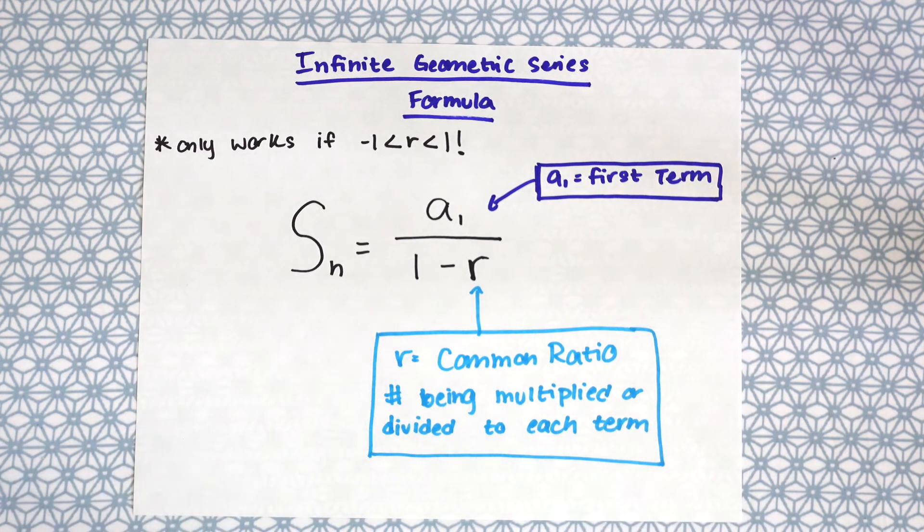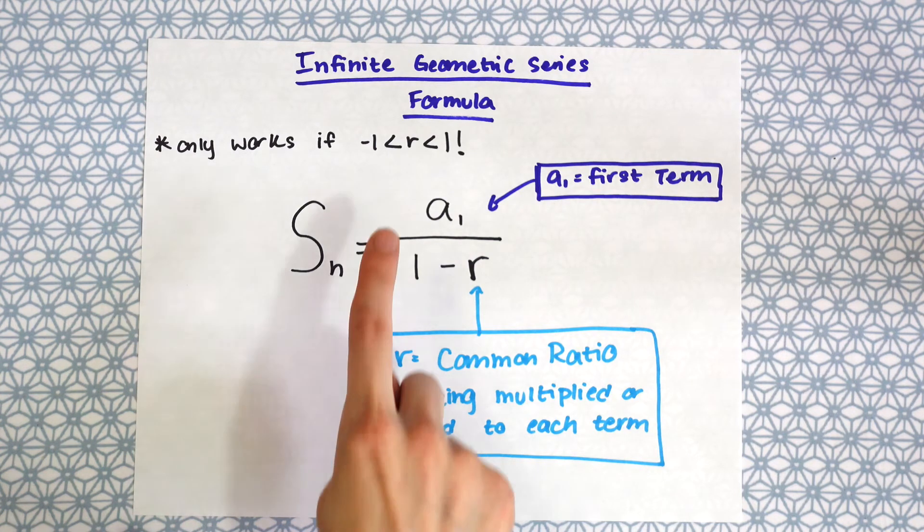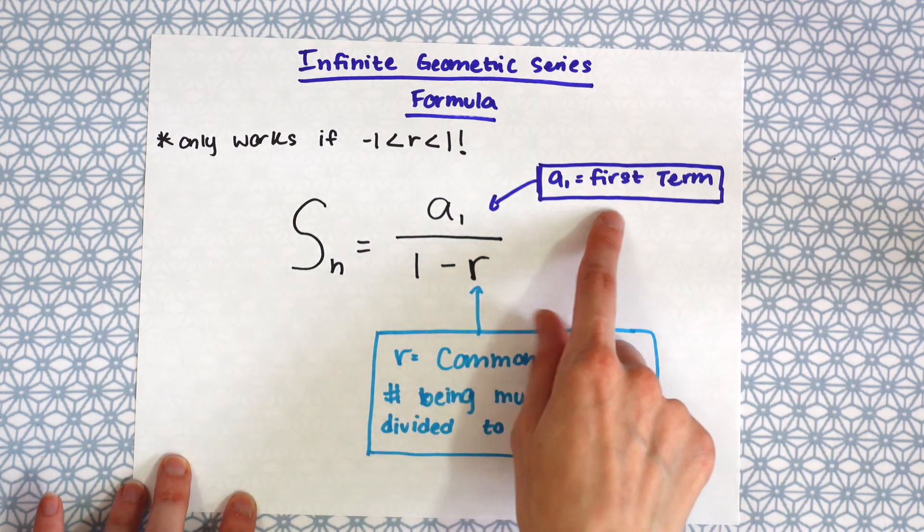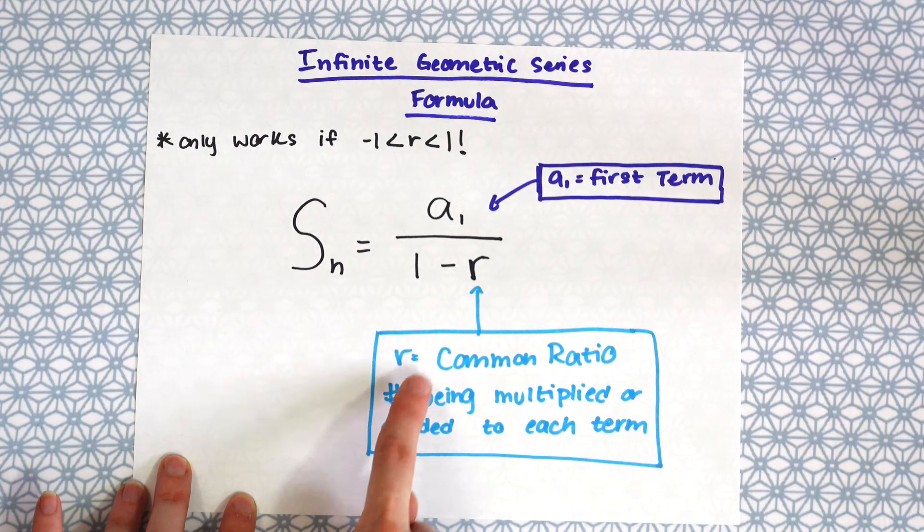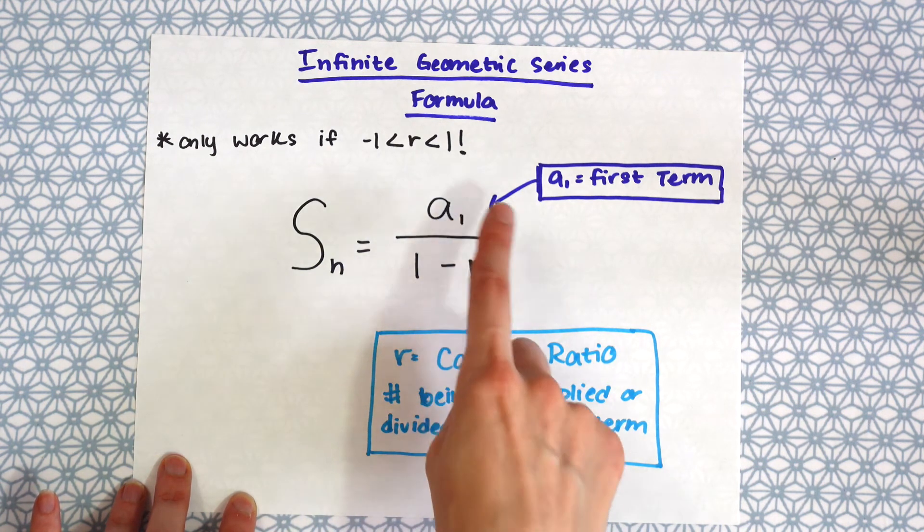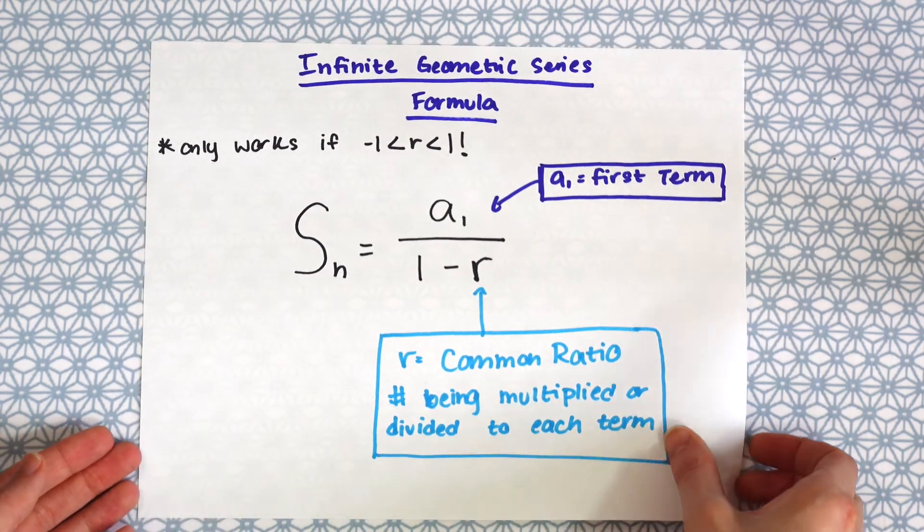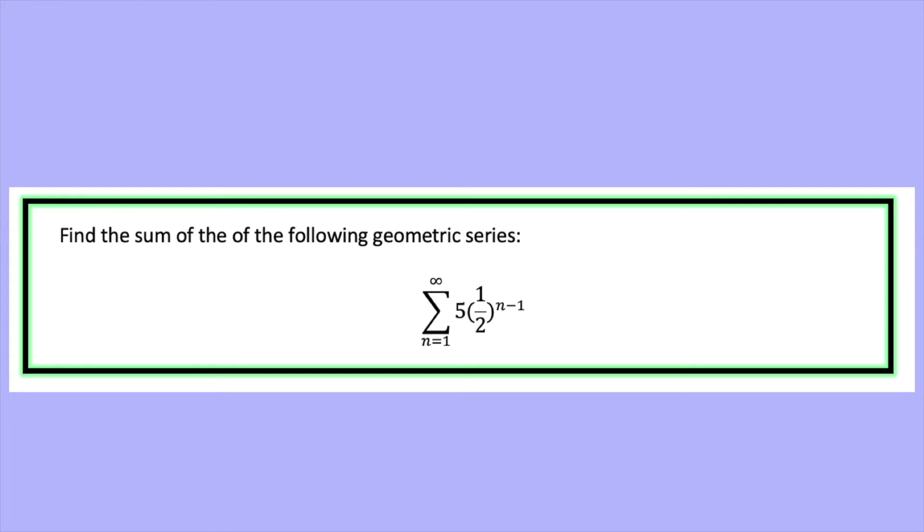So that's where our infinite geometric series formula comes in. So remember this only works for that has that common ratio between negative 1 and 1. So once you know that, it's a really simple formula. So we have a sub 1, which is the first term, over 1 minus r, the common ratio. So we have the first term and then 1 minus, over 1 minus r, the common ratio, that number being multiplied or divided to each term. So let's now look back at our example.